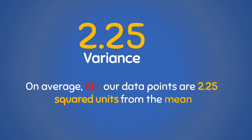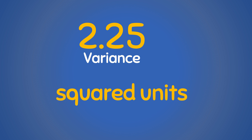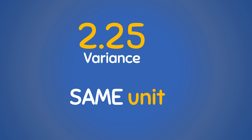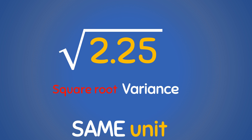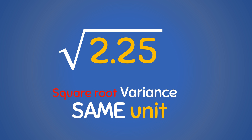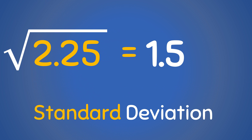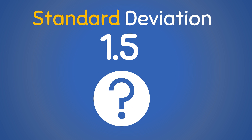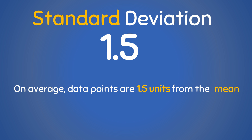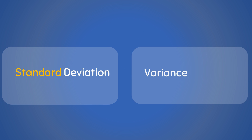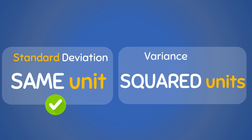Now variance in and of itself is not that easy to understand because it considers the units in squares. In order to put the variation in the data in a more comprehensible way, we need a measure that is in the same unit as the data points, not the squared units. So let's find the square root of the variance. The square root of the variance gives a value in the same units as the data points — statisticians call this the standard deviation. Standard here because it's a standard way of quantifying variation. The square root of 2.25 is 1.5, meaning the data values are on average 1.5 units away from the mean. The standard deviation is easier to understand compared to variance because it is in the same units as the original data, while variance has squared units.